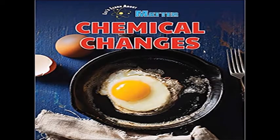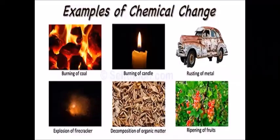For example, a chemical change happens when eggs are cooked. When eggs are cooked, they can never change back.